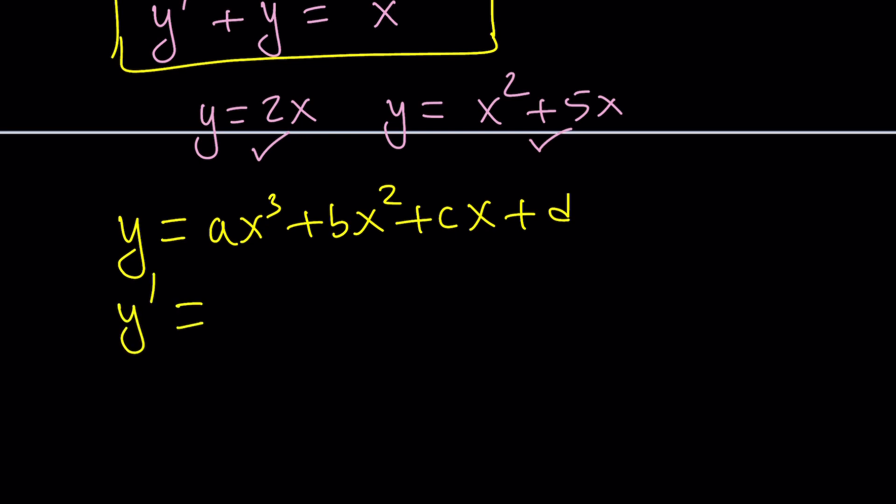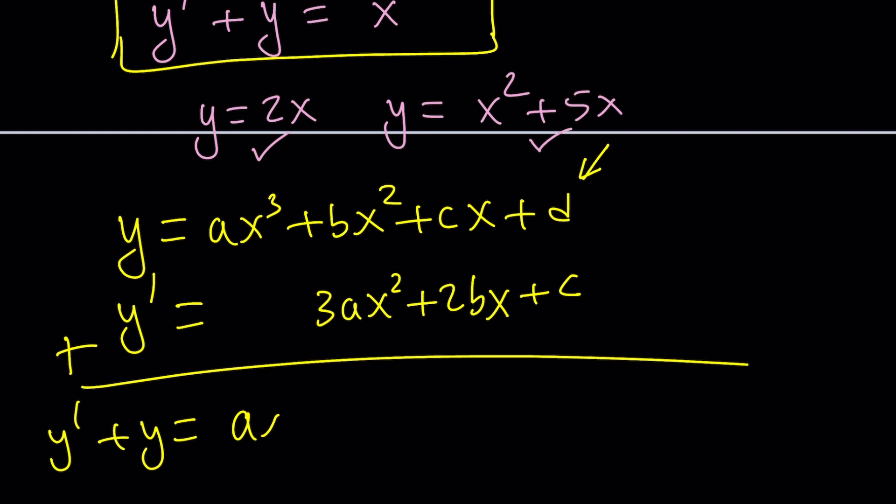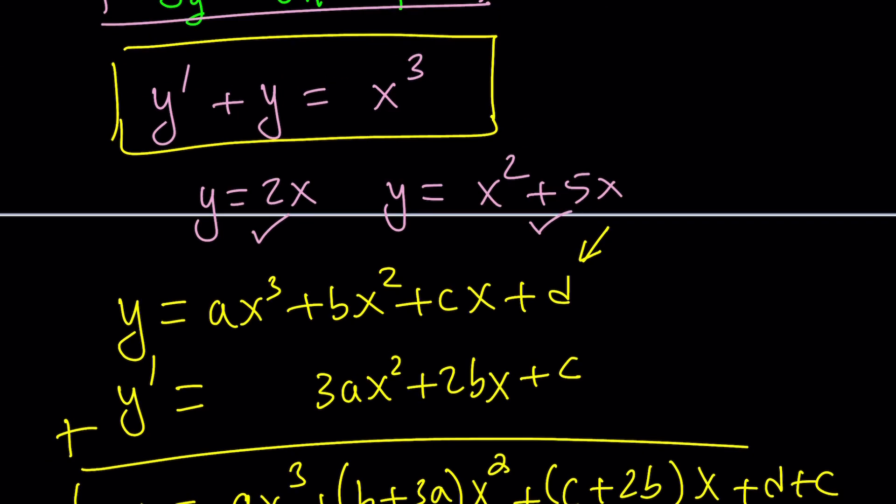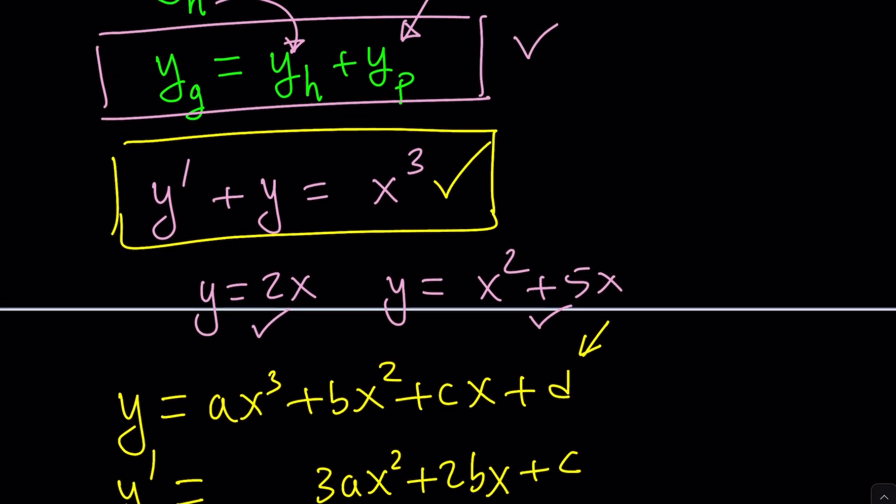Differentiate y, and when you differentiate it, ax cubed is just going to be 3ax squared. I'm going to align the like terms, and then bx squared is going to be 2bx - 2b or not 2b popped up again - plus c. The derivative of d is zero because it's a constant. Now we're going to add these up. y prime plus y is going to be ax cubed plus b plus 3a as the coefficient of x squared plus c plus 2bx plus d plus c. And I want this to be what? x cubed. Nice.